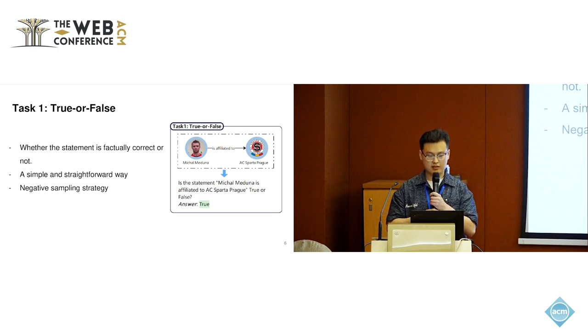Let me introduce our KG Quiz benchmark step by step. Task one is where we give the model a statement and let the model simply make the judgment whether it's factual or not factual. This is the simplest and most straightforward way to test whether the model knows a fact or not. The process is simple: we assume all the triplets in the knowledge graph are factual.